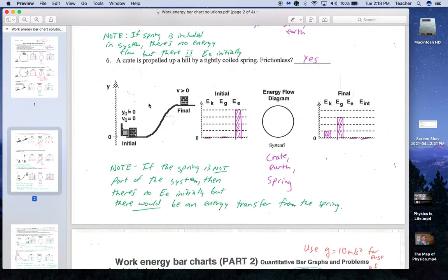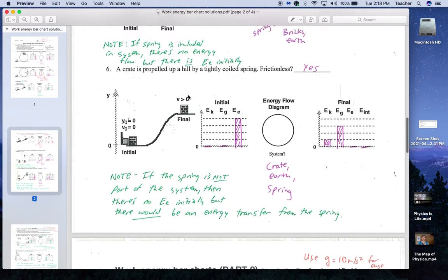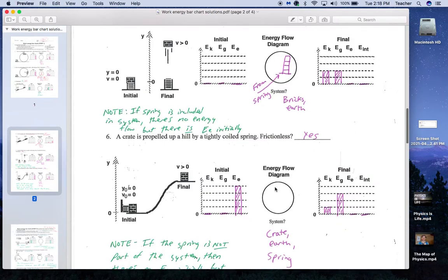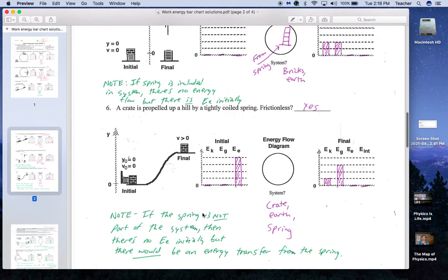Six, a crate is propelled uphill by a tightly coiled spring. Again, it's moving still here at the end. So very similar to number five. I said it was frictionless. If there's friction, you could have it included here if you include the crate Earth spring system, maybe the surface as well. You probably would need the surface if this internal energy stays in. And if you didn't include the surface, some of that heat energy would leave.